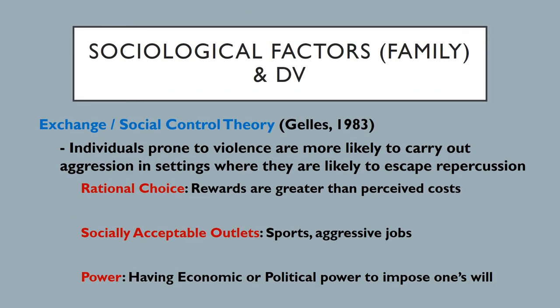The first family-based theory we'll look at is the exchange and social control theory. If you remember from your criminal justice theory course, some of these ideas connect to social control in general and rational choice. But this theory, put out by Gels in 1983, really focused on and helps to shine a light on domestic violence.